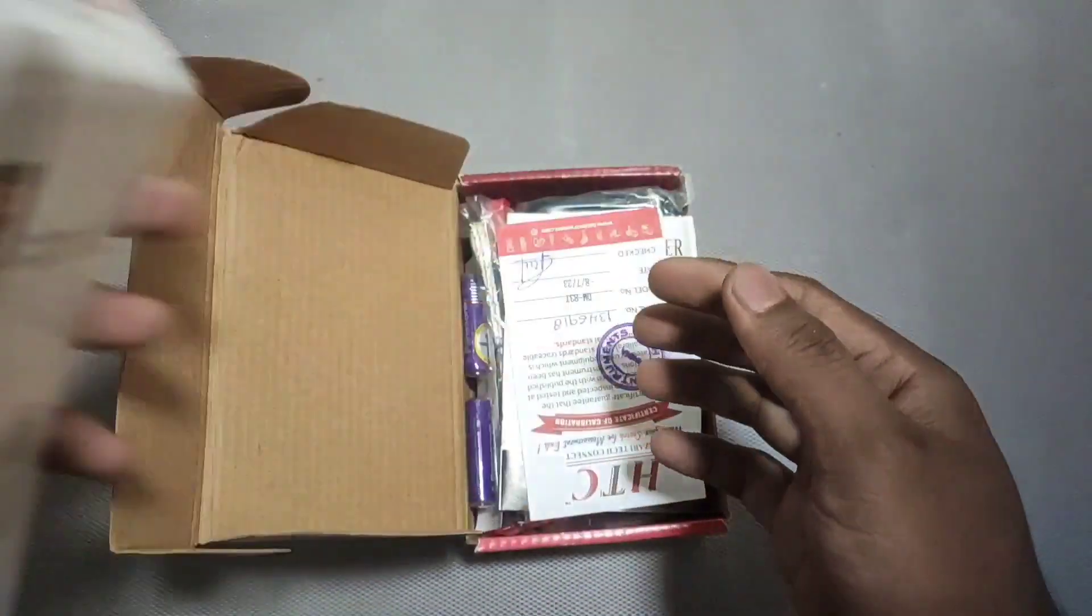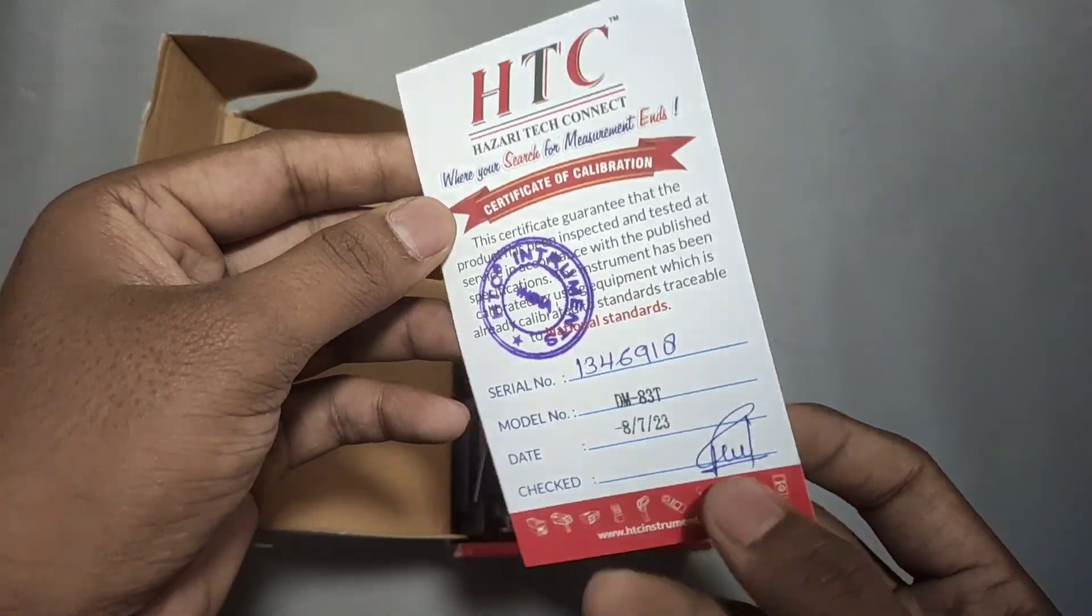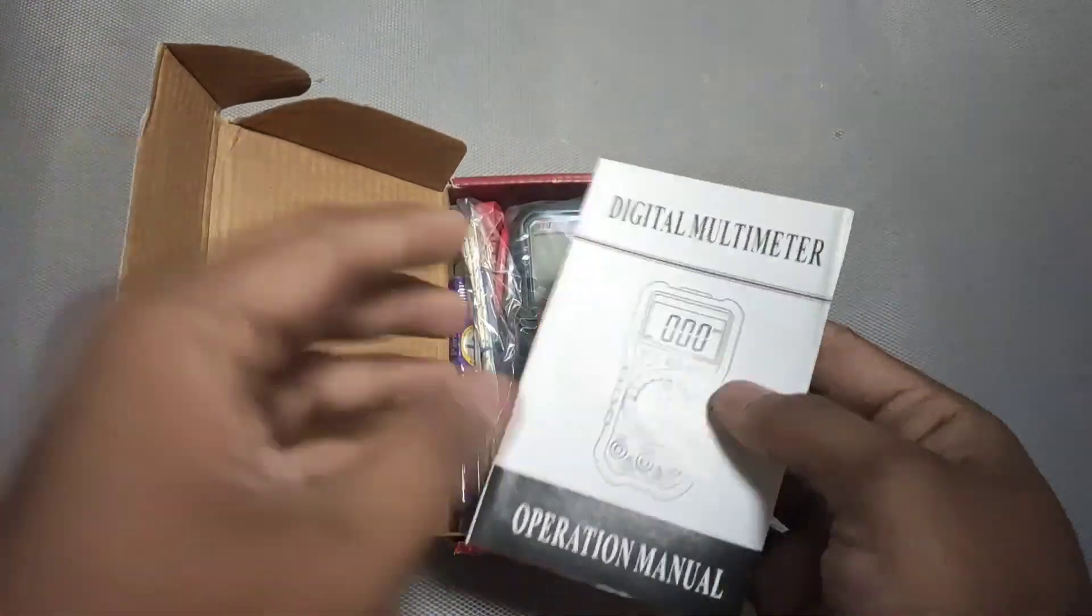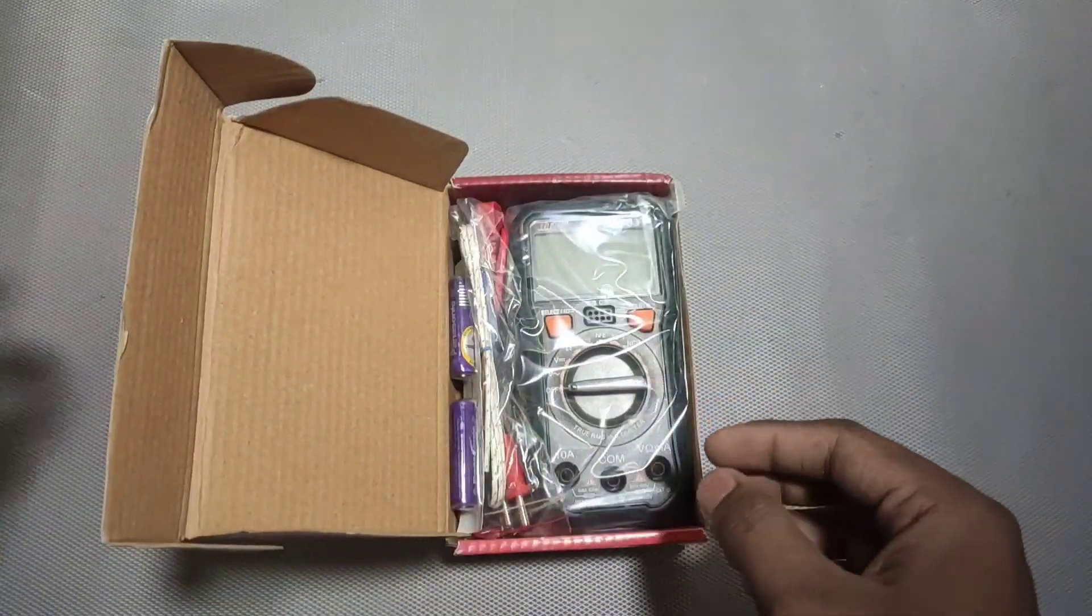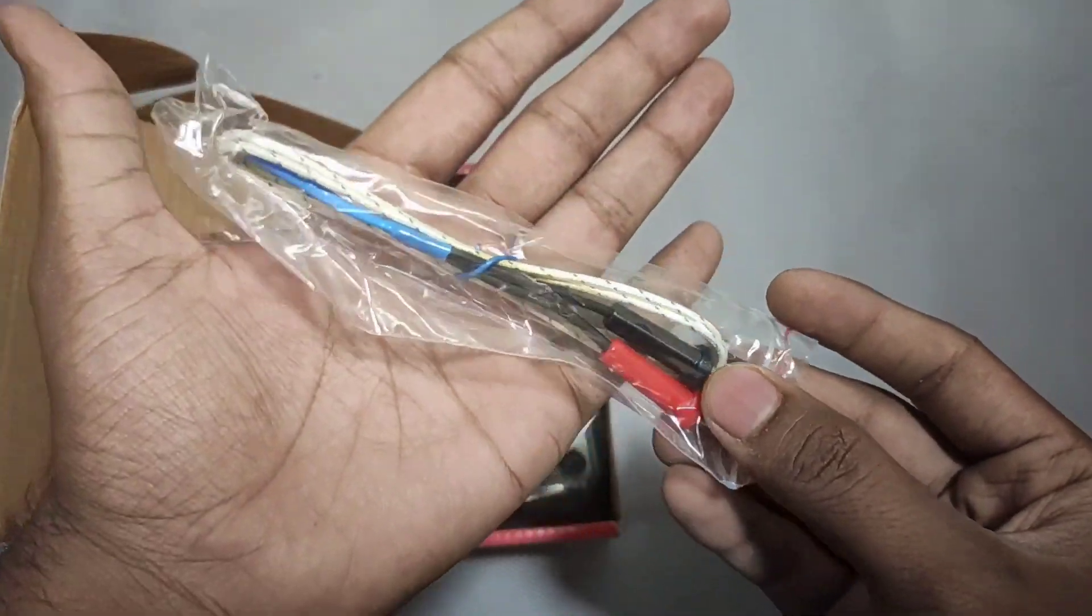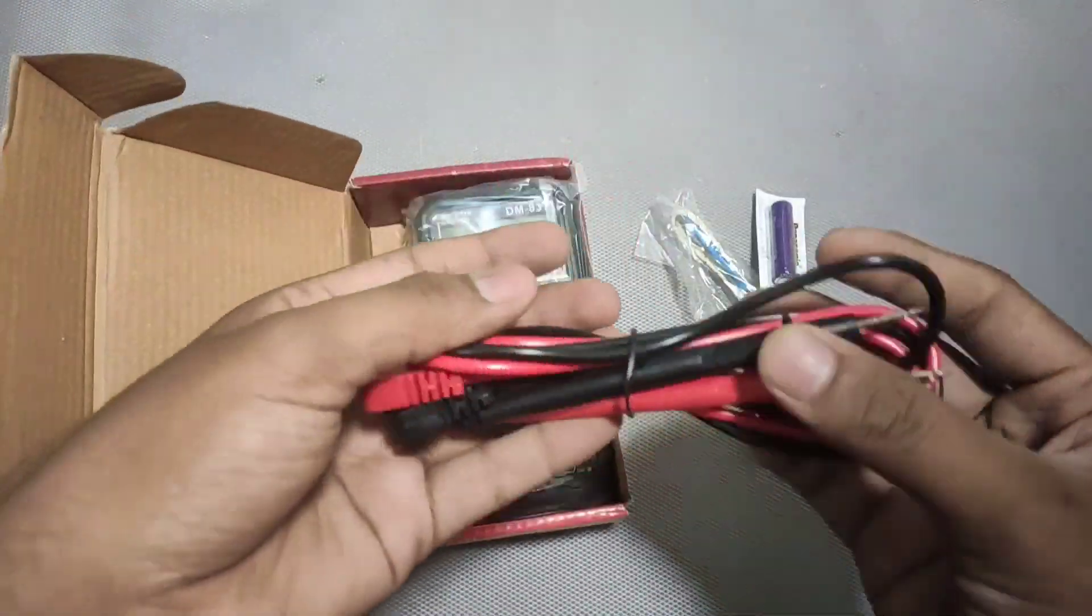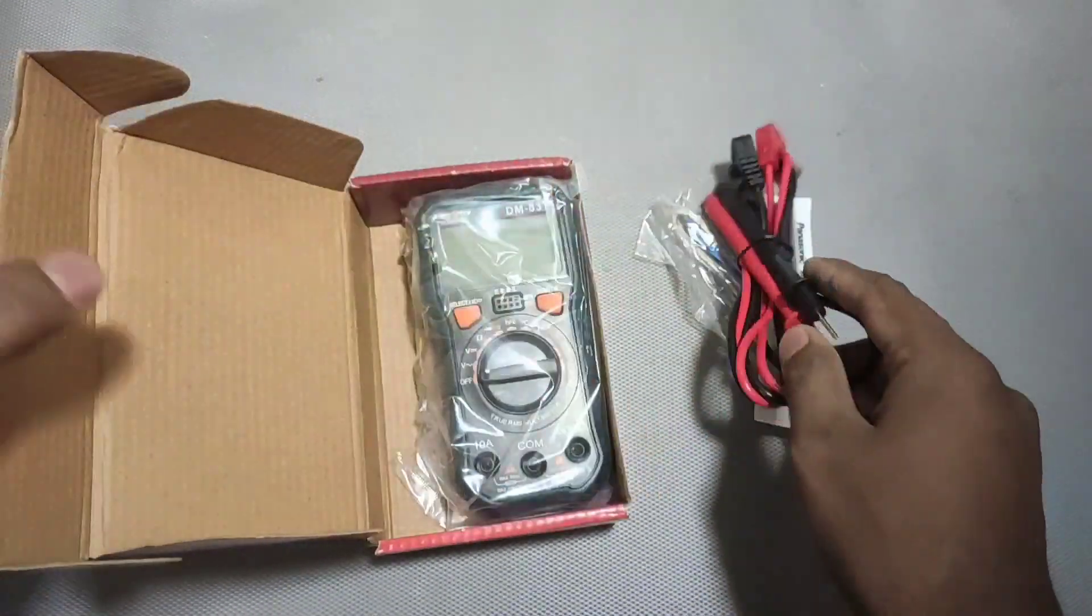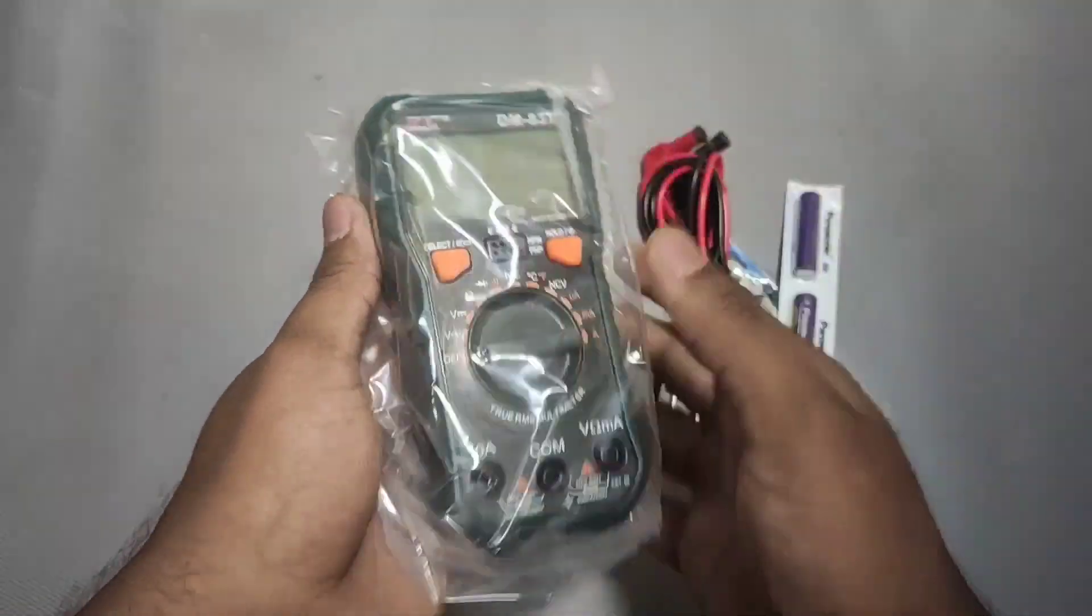This is the brochure of HTC and this is the warranty card and we get here user manual. We get a temperature probe, AAA batteries, test leads and of course a multimeter.